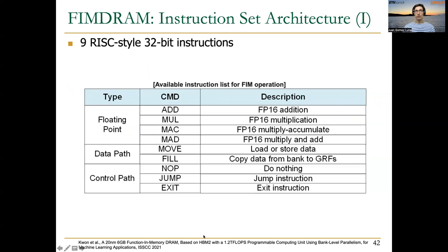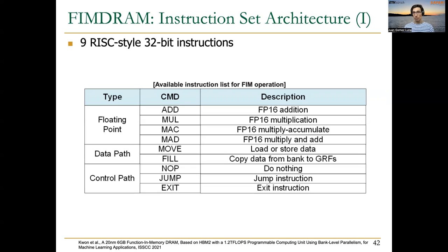Regarding the instruction set architecture, it is pretty simple: nine RISC-style 32-bit instructions as shown in this table. There are different types — floating-point data path and control path. Key instructions include addition, multiplication, and multiply-and-accumulate or multiply-and-add operations, plus move instructions to load and store data. A specific bit in the move instruction format enables execution of the ReLU activation function, which is widely used in many neural networks such as CNNs. There are also control instructions like NOP and a jump instruction needed to re-execute a sequence of instructions loaded in the CRF, which only holds 32 instructions.